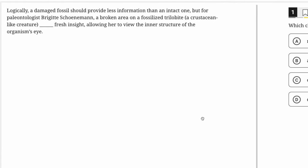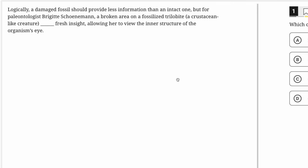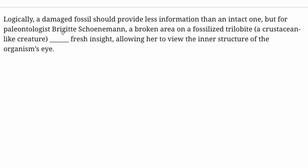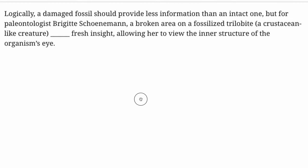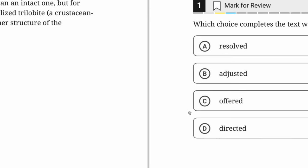This is module two of the blue book PSAT, specifically the harder version of module two. We'll get started with the words in context questions. As always, focus on the passage and use the clues in the passage to come up with an approximate answer — then let that guide us to the correct answer among the four choices. A damaged fossil should logically provide less information than an intact one, but for this paleontologist a broken area on a fossilized trilobite, a crustacean-like creature, provided — yeah, it gave her information.